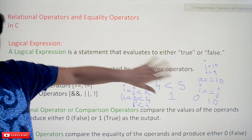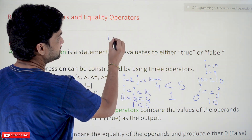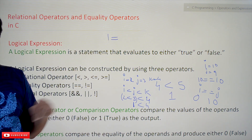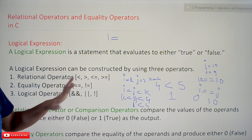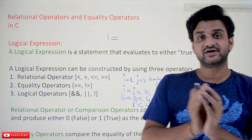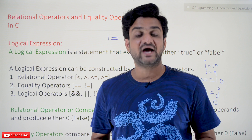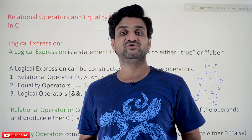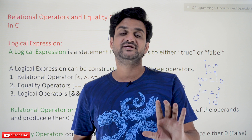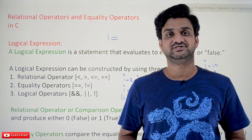Similarly, for not-equal-to comparison, the symbol is an exclamation mark followed by an equal-to sign (!=). That is the basic understanding of relational and equality operators. Thanks for watching — if you haven't subscribed to our channel, please subscribe and press the bell icon for the latest updates. Post any doubts in the comment section below.